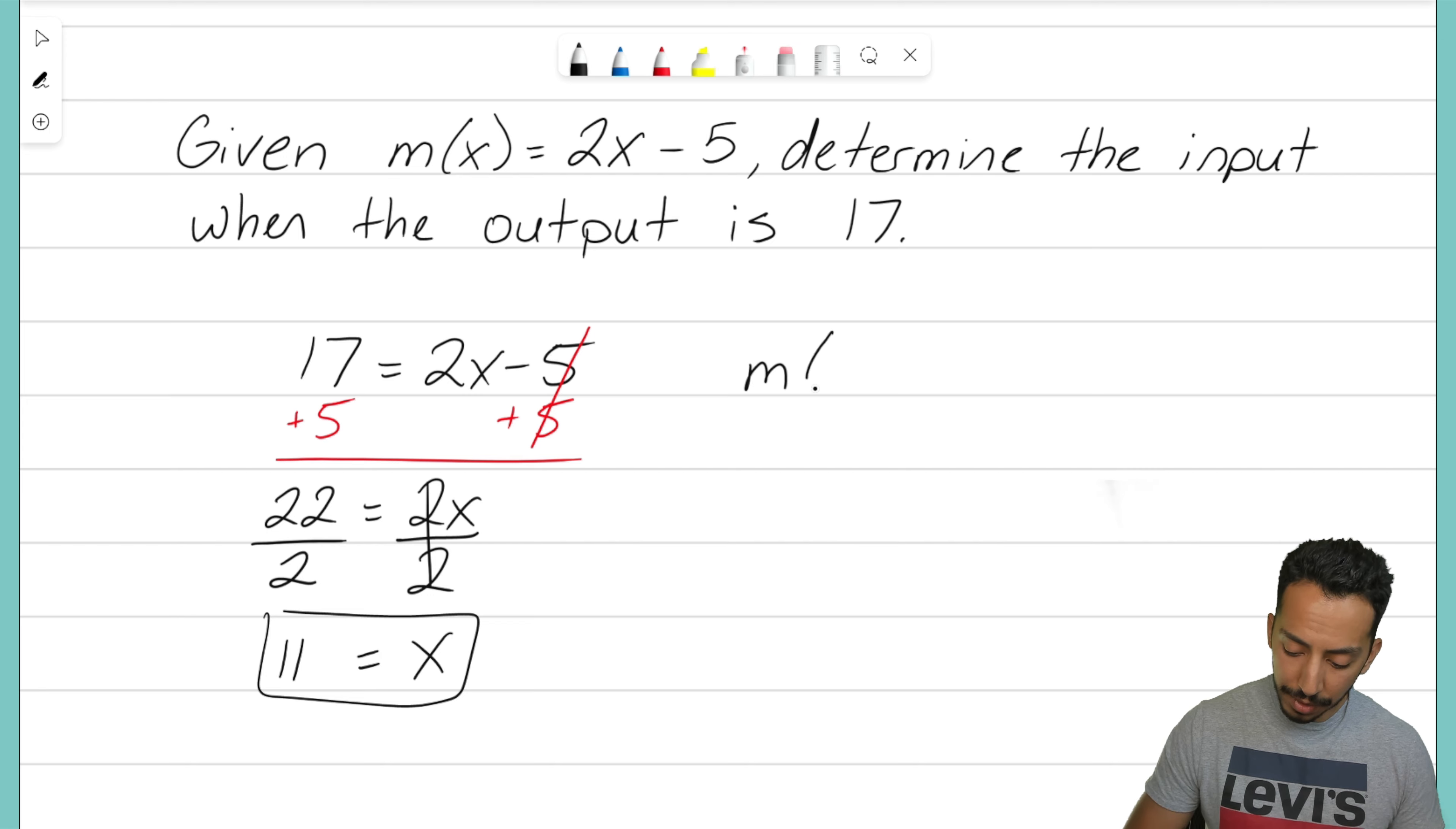Well then take your function m(x) and let's plug in 11. And if we do this we should end up with our output of 17. This is a way to check your work, to double check that you did the steps correctly and that we're going to get 17 as our output. So let's solve it real quick. 2 times 11 is 22. 22 minus 5 gives us 17.